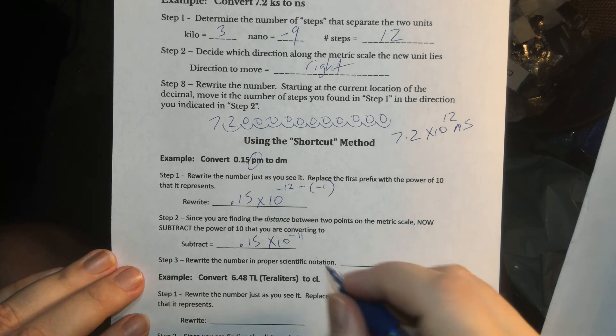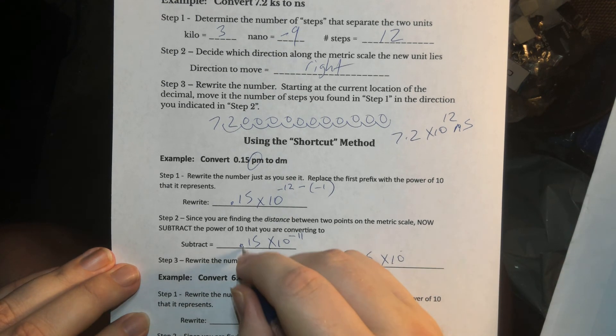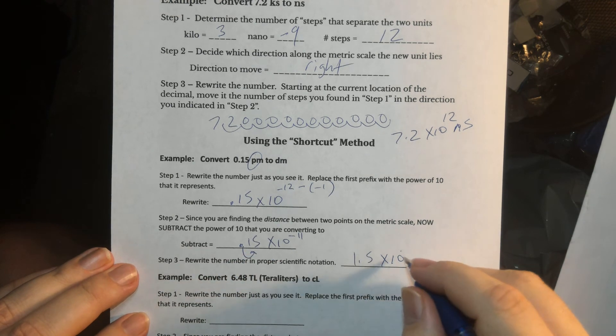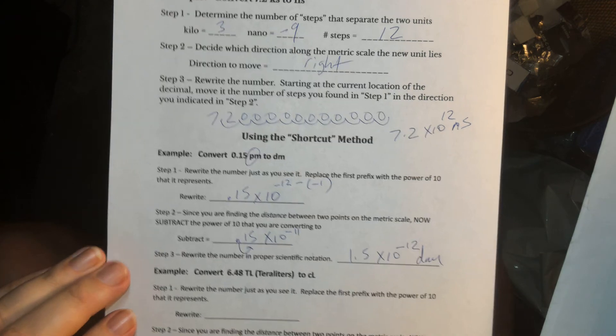And then that gives us 0.15 times 10 to the minus 11. And then we can just put that in proper scientific notation. 1.5 times 10. Move it one place to the right. That's negative. So minus 12. And there. That's a new unit conversion.